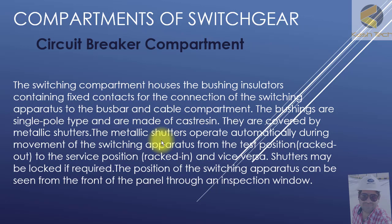The metallic shutters operate automatically during movement of switching operators from the test position, rack-out, to the service position — that's called rack-in — and vice versa. Shutters may be locked if required. The position of switching operators can be seen from the front of the panel through an inspection window.